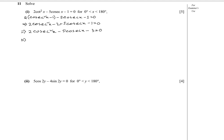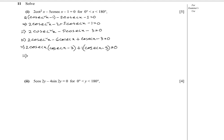Now we do middle term factorization. We write 2csc²x minus 6cscx plus cscx minus 3 equals zero. Taking 2cscx common gives cscx minus 3, and taking 1 common gives cscx minus 3 equals zero. Taking cscx minus 3 common, we get 2cscx plus 1 equals zero.